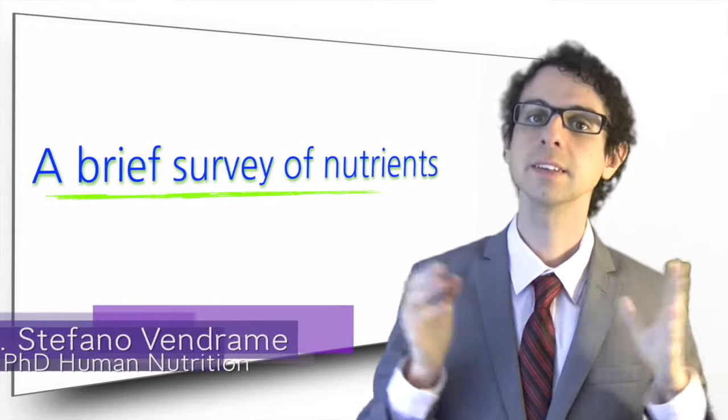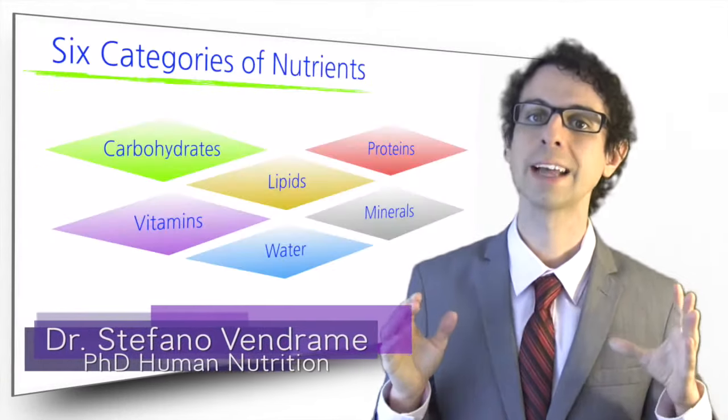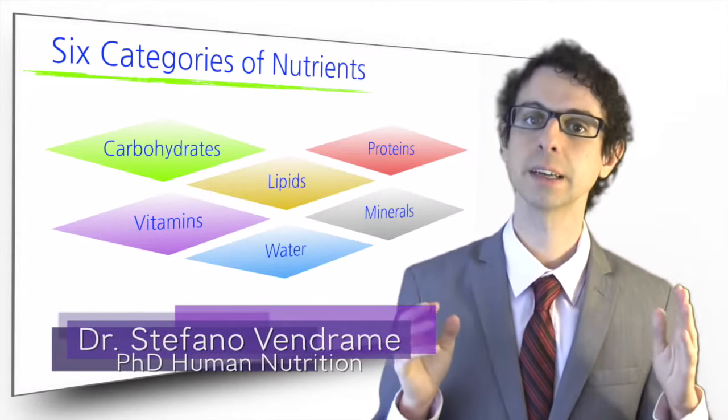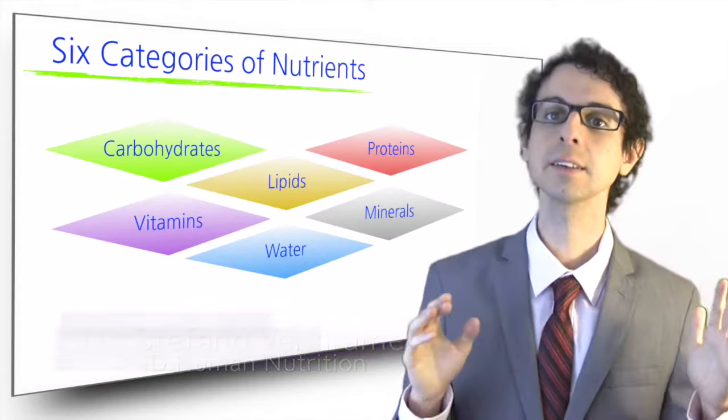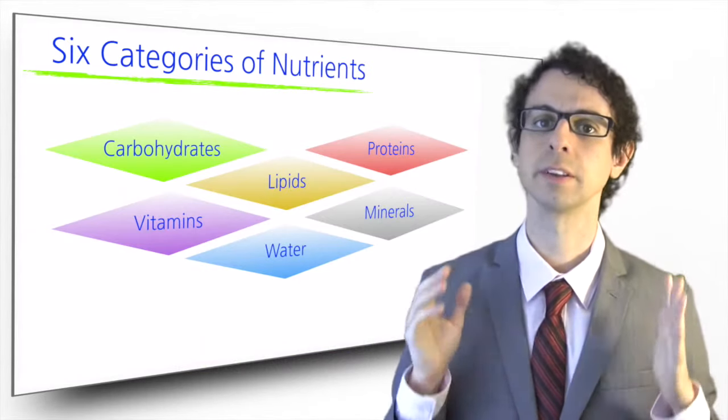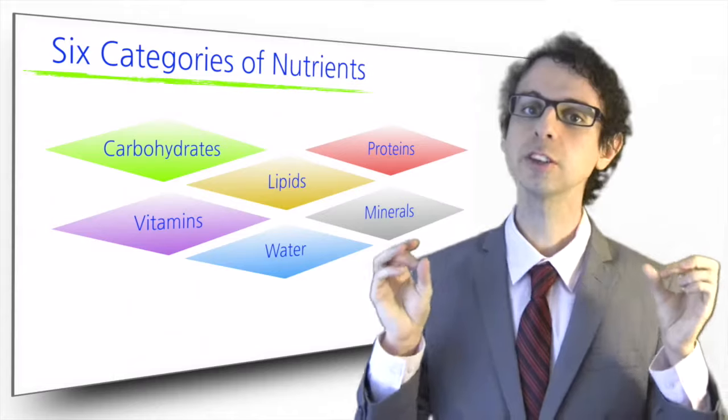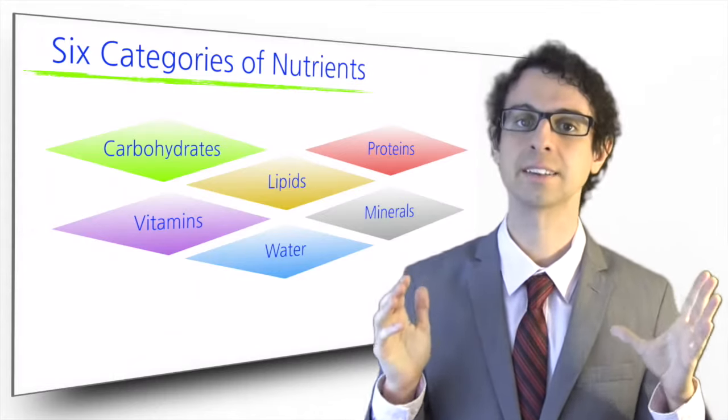We said that there are six categories of nutrients: carbohydrates, lipids, proteins, vitamins, the essential minerals, and water. We will study these six categories of nutrients in a lot more detail during this course, but for now let's just briefly introduce a few facts about them.